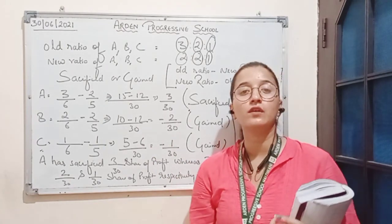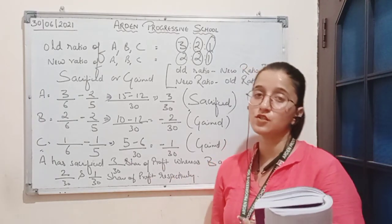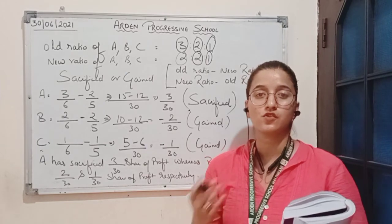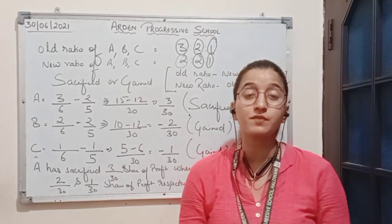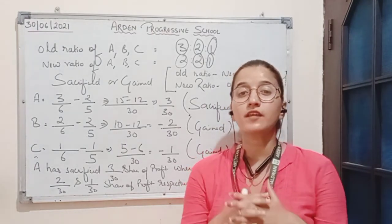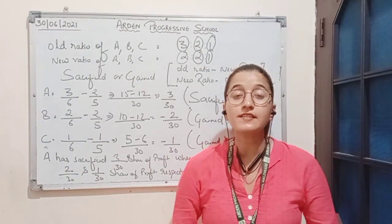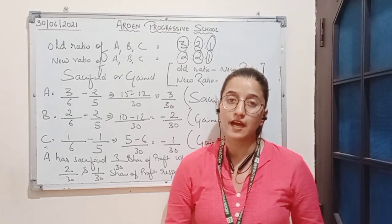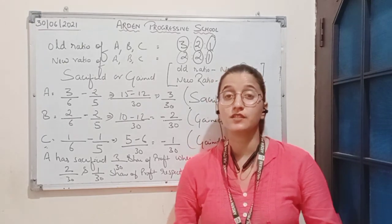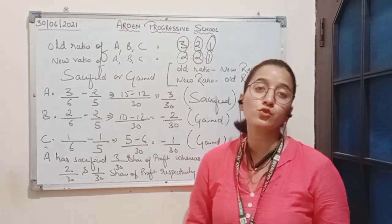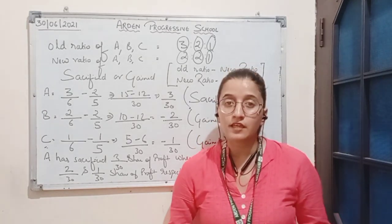This is how we calculate the sacrificing and gaining ratio among the existing partners in the situation when there is a change in profit sharing ratio. In this session we have learnt about the first adjustment required when there is a change in profit sharing ratio among existing partners — that adjustment is determination of sacrificing and gaining ratio. We have also studied the formulas and solved two numerical questions based on this topic.